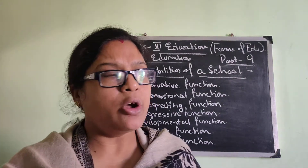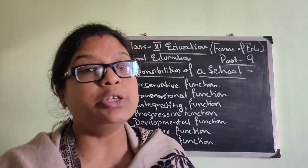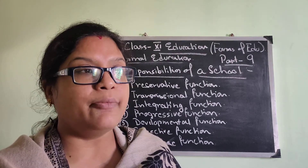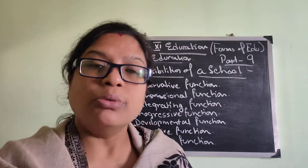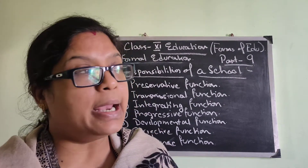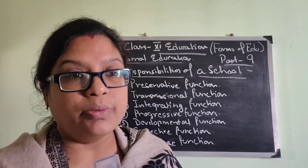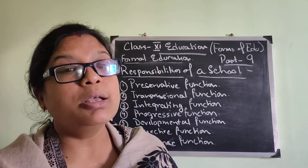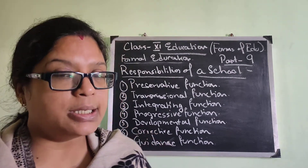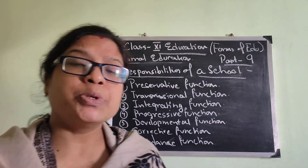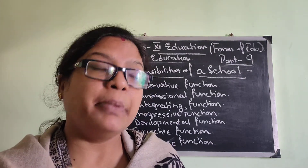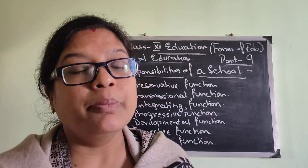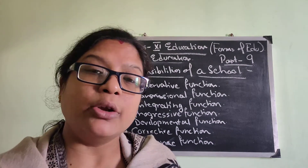Next point: Progressive Function. Why do we change our curriculum and syllabus? The reason is according to the needs and demands of society. After some years, the board or school authority decides the syllabus must be changed, because the society has changed and its requirements have changed. So when society is progressing, the school will help students to be progressive — not only in their mind but also in knowledge.